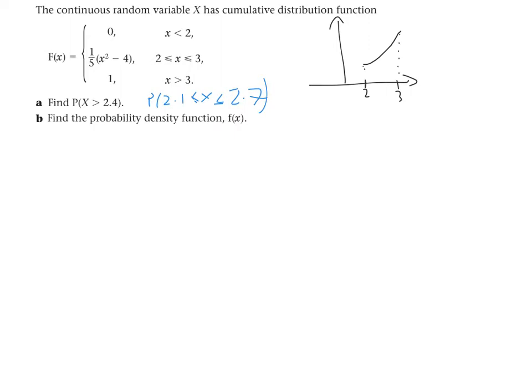And we're asked to find the probability that x is greater than 2.4. So, if I mark 2.4 in on our diagram, we need to find the area greater than 2.4. So this shaded area here, so to the right of 2.4.